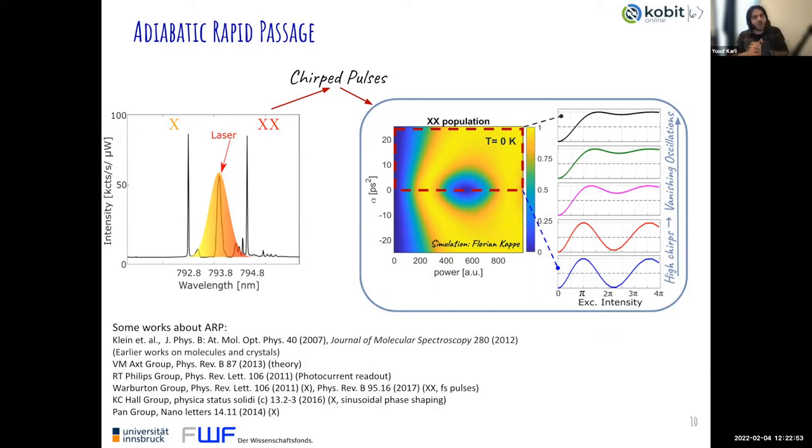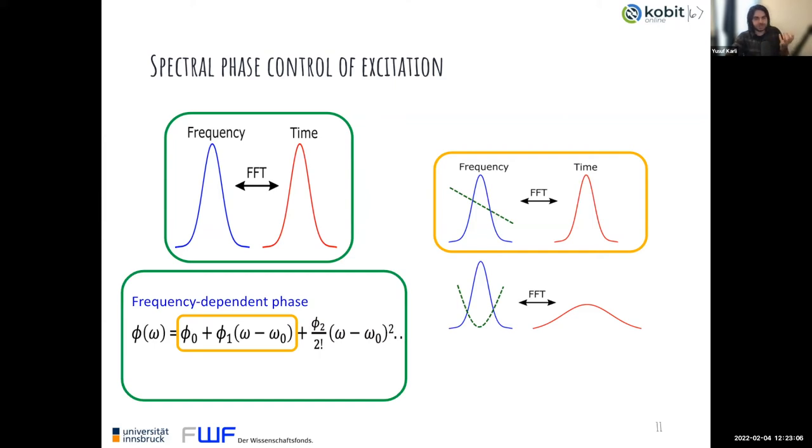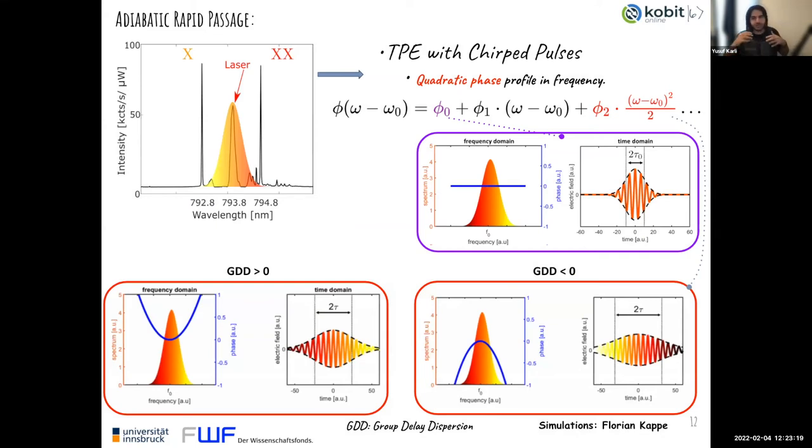We can drive a quantum dot with high chirp laser pulses to have a photon pair source that is insensitive to precise excitation power and detuning. What does it mean chirping a laser pulse? When we chirp laser pulses, this corresponds to a quadratic phase profile in the frequency domain and temporal broadening in the time domain. Depending on the phase profile applied, we can have no chirping, negative chirping, or positive chirping. When we drive quantum dots resonantly with chirped laser pulses, for example the two-photon resonant transition from ground state to the biexcitonic state, the population of the state becomes independent of the pulse energy. This is known as adiabatic rapid passage or rapid adiabatic passage.